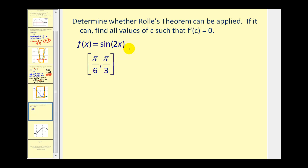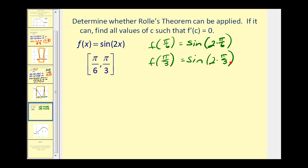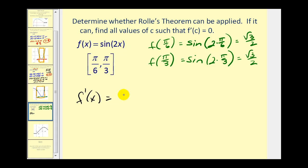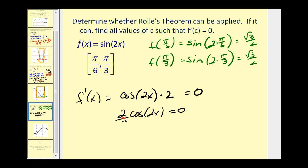Let's try one more — a trig function. We first determine if f of pi over six equals f of pi over three. That gives sine of two times pi over six and sine of two pi over three. The sine of pi over three is square root of three over two, and the sine of two pi over three is also square root of three over two. Both share a reference angle of sixty degrees in the first and second quadrant, and sine is positive in both. This function is continuous and differentiable on the interval, so we find where the derivative equals zero. Using the chain rule, f prime of x equals cosine of two x times two.